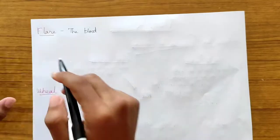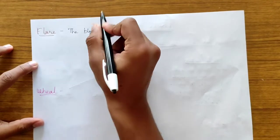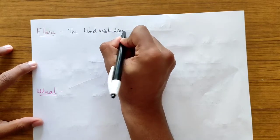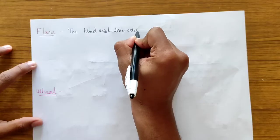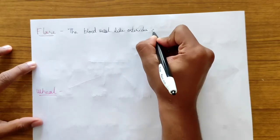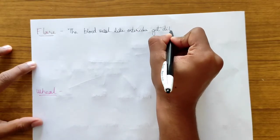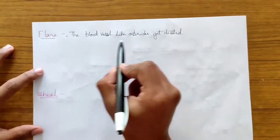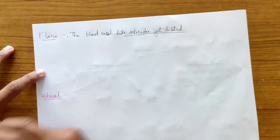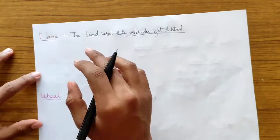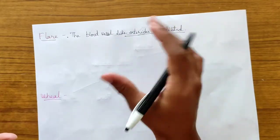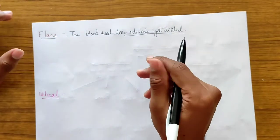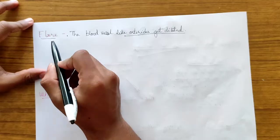Then comes the flare reaction. In the flare reaction, blood vessels like arterioles get dilated. Due to this dilation of the arterioles, the redness of the skin spreads throughout the skin, causing the flare component of the triple response.